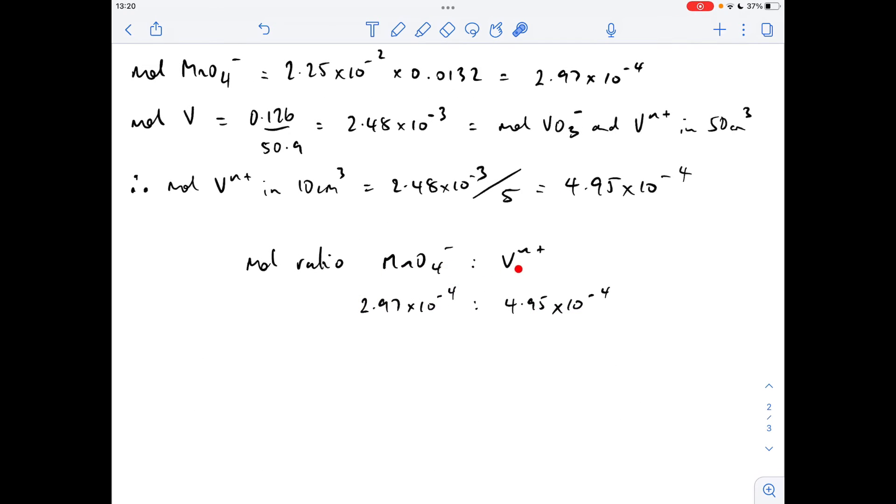So mole ratio wise, we've got 2.97 times 10 to the minus 4 to 4.95 times 10 to the minus 4. If we divide both by the smallest, that gives us a 1 to 1.67 mole ratio. To get them into whole numbers, multiply by 3. So we've got a 3 to 5 mole ratio of the MnO4 minus ion to V2+.